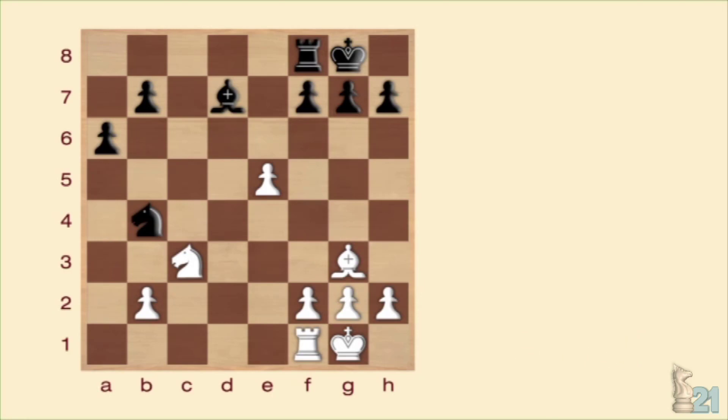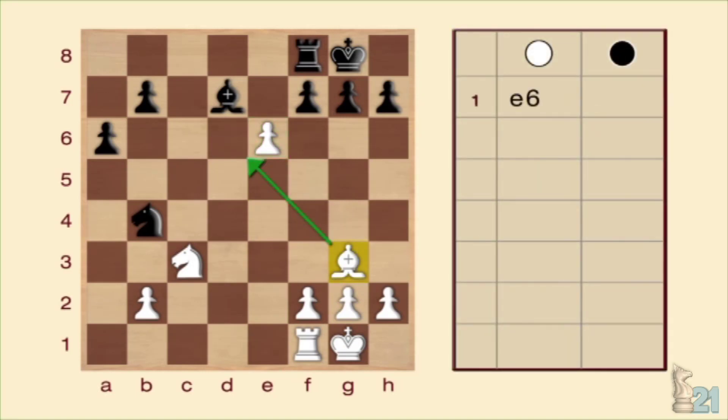Primero de todo, debemos identificar cuál es la pieza enemiga que se haya indefensa. ¿La habéis encontrado? Exacto, el caballo negro en b4. Si no estuviera el peón en e5, podríamos subir el alfil hasta d6 y amenazar torre y caballo a la vez. El caballo podría escapar, pero entonces caería la torre que es de mayor valor que el alfil. La solución está clara. El peón se sacrifica en e6 y deja la diagonal libre para el alfil.